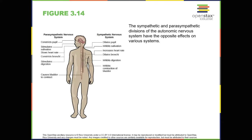The autonomic nervous system controls our internal organs and glands and is generally considered to be outside the realm of voluntary control. It can be further subdivided into the sympathetic and parasympathetic divisions, as shown in figure 3.14. The sympathetic nervous system is involved in preparing the body for stress-related activities, whereas the parasympathetic nervous system is associated with returning the body to routine day-to-day operations. The two systems have complementary functions, operating in tandem to maintain the body's homeostasis.